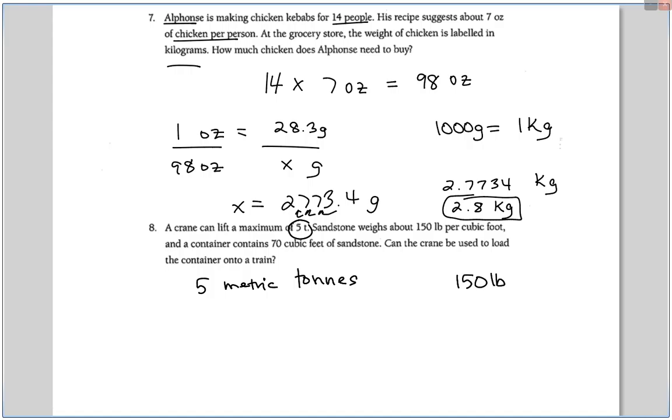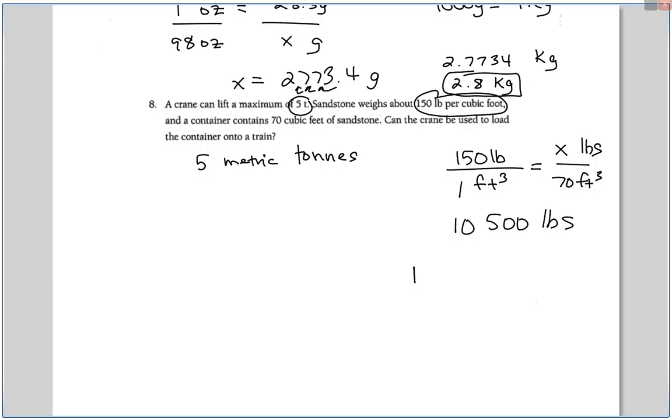Number eight, a crane can lift a maximum of five little t, and little t is metric ton. So a crane can lift a maximum of five metric tons. And I would probably just jot that down because I have a hard time remembering little t versus tn. Sandstone weighs about 150 pounds per cubic foot. And a container contains 70 cubic feet of sandstone. So cubic feet goes down here, 70 cubic feet. We can solve for x pounds. Cross multiplying, this is a one down here, 150 times 70 is 10,500 pounds.